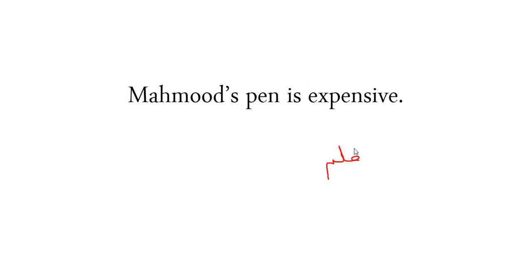Mahmood's pen is expensive. Now we're combining mudaf and mudaf ilayh with what we learned in lesson one — mubtada and khabar — to make a full sentence. The mudaf goes first: Qalam. Default state is raf'ah, so one dhamma: Qalamun. The mudaf ilayh is in the state of jar: Qalamun Mahmoodin. Then the khabar: Ghalin — expensive.